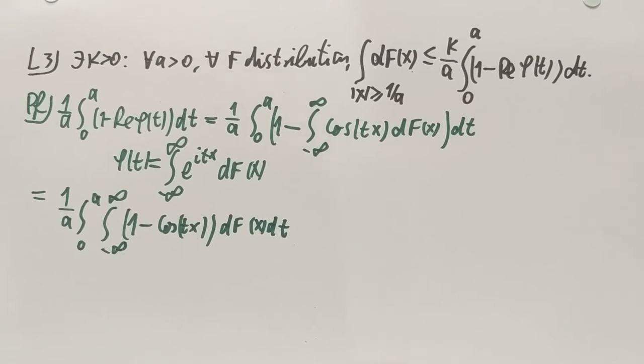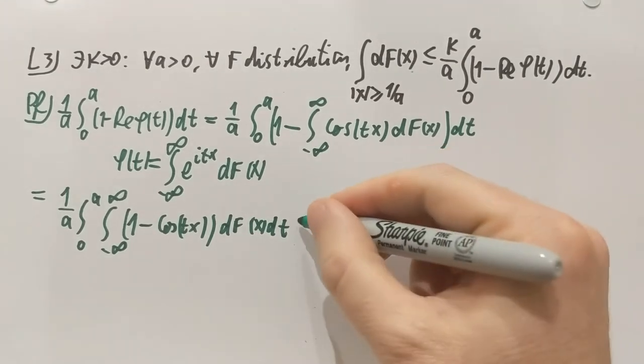Now comes the mathematician reflex. I see two integrals. I immediately want to swap them. Can I do that? Well, 1 minus cosine is bounded in mod by 2, no matter what t and x do. They are real numbers. So this is bounded by 2. If I integrate 2 df, that's 2. If I integrate 2 from 0 to a dt, that's finite. So Fubini allows me to exchange the order of the two integrations.